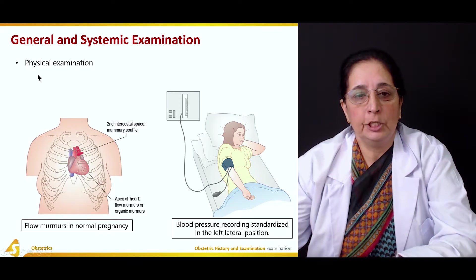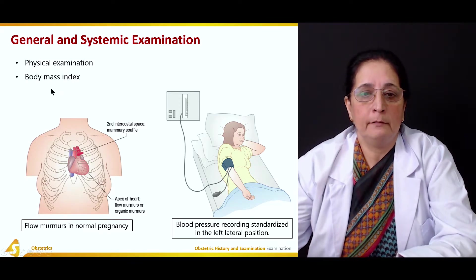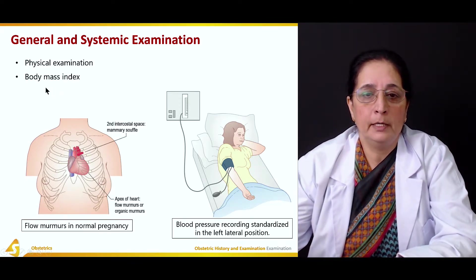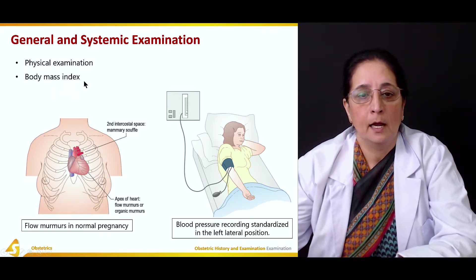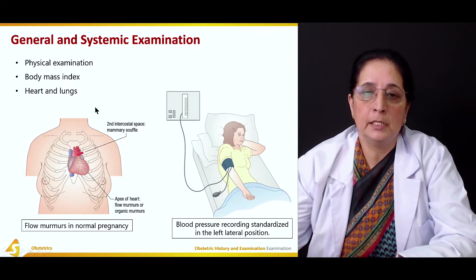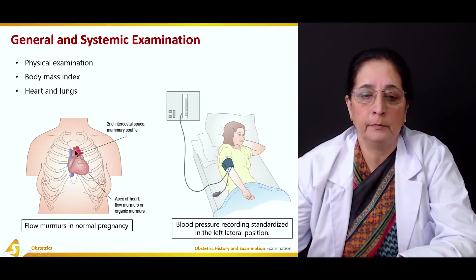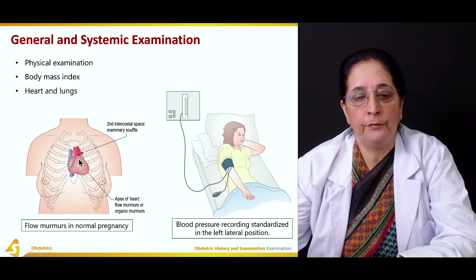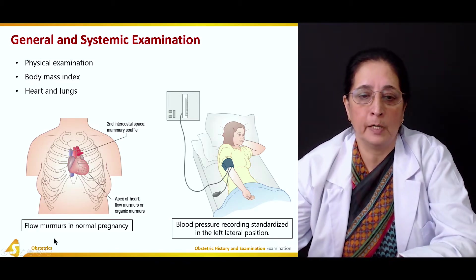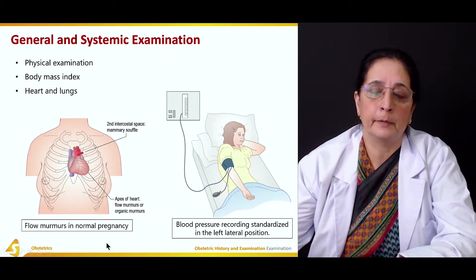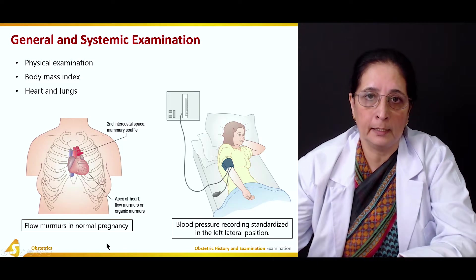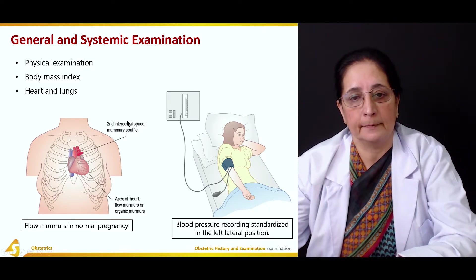Physical examination includes body mass index, and examination of the heart and lungs usually done by auscultation using a stethoscope. Soft flow murmurs are common in normal pregnancy.